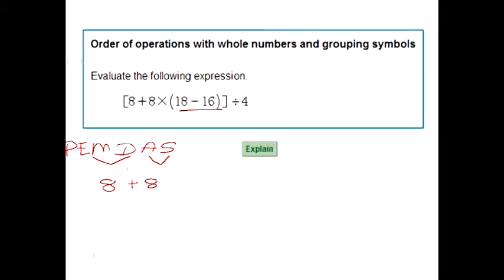So we're first going to handle the parentheses. I'm going to write this whole problem again: eight plus eight times, and then the 18 minus 16 is just two, and then divided by four. We've got to watch out for these brackets, we've got this square bracket going on here, so I want to make sure that I put that bracket in and don't lose it.